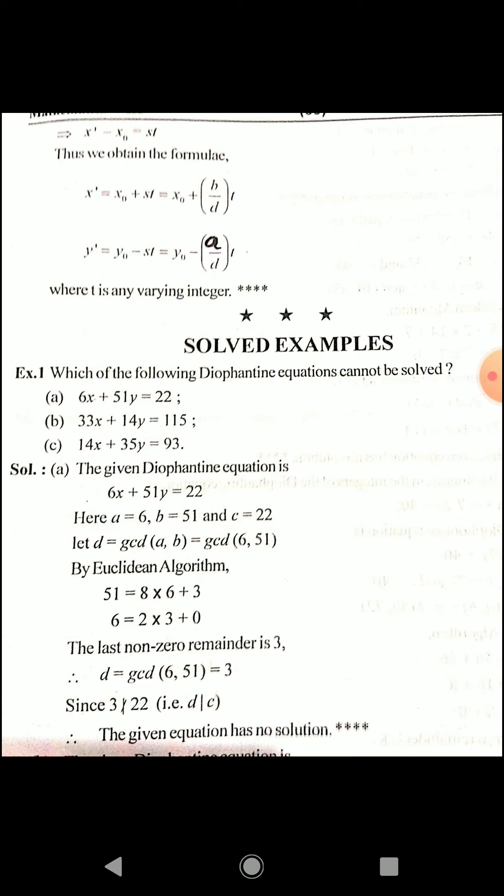To summarize the theorem: the Diophantine equation ax plus by equals c has a solution if and only if d divides c, where d is the GCD of a and b. If x₀, y₀ is any particular solution, then all other solutions are given by x₀ plus (b/d)t and y₀ minus (a/d)t.